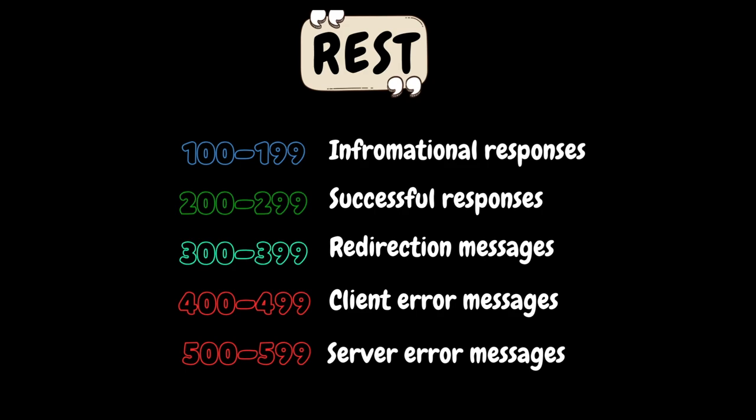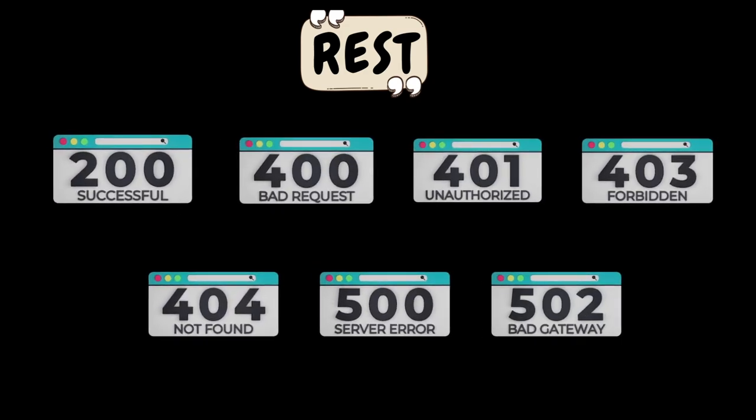The common codes we generally see during testing are: 200 for successful requests, 400 for bad requests, 401 for unauthorized requests, 403 for forbidden requests, 404 for not found requests, 500 for server-side errors, and 502 for bad gateway errors. In interviews, they may ask what HTTP 500 status code means, so you should be able to explain it. Please try to remember the codes along with the reasons behind each status code.